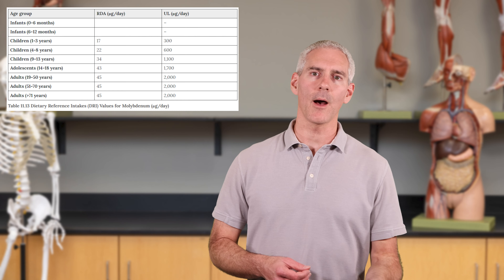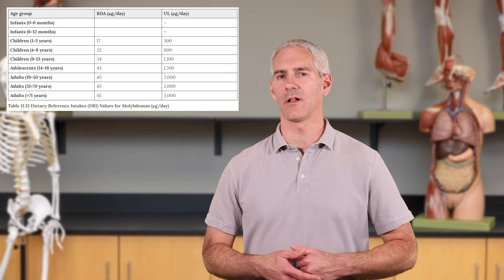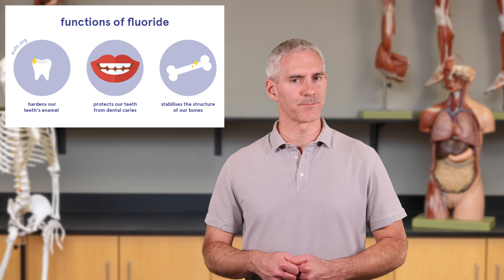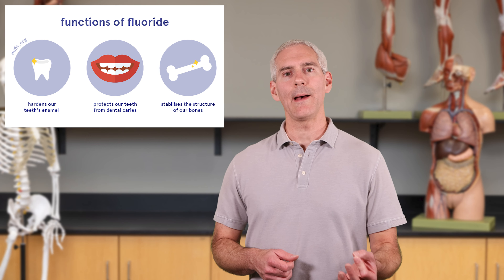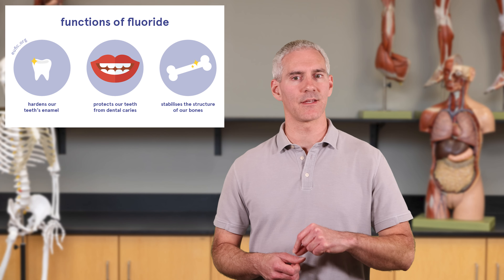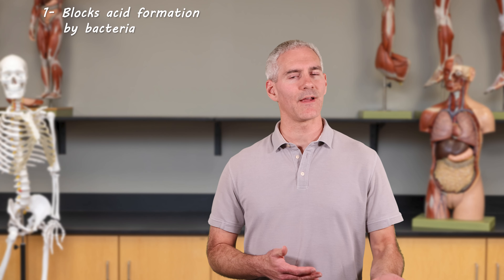The RDA for molybdenum is about 17 micrograms for infants up to 45 micrograms for adults. That brings us to our last trace element: fluoride. You've probably heard of fluoride in relation to your teeth — that's because that's one of the main places it's used. Fluoride helps your teeth stay healthy and restore enamel when necessary.